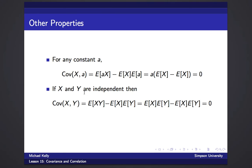If X and Y are independent, then Cov(X, Y) = E[XY] minus E[X]E[Y]. For independent random variables, E[XY] equals E[X]·E[Y], so those terms cancel and the covariance is zero. So independent random variables have zero covariance. However, it's very important to note that if the covariance is zero, that does not mean that X and Y are independent.